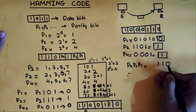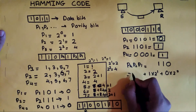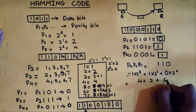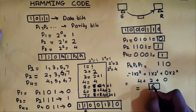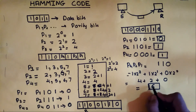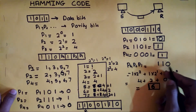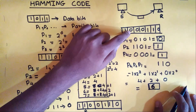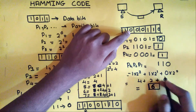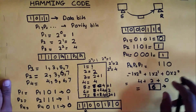The receiver now converts the parity results into binary: 0×2⁰ + 1×2¹ + 1×2² = 0 + 2 + 4 = 6. This means there is an error at position 6, which is exactly where we introduced the error by replacing the 6th position bit with 0. The Hamming code can detect and correct single-bit errors. If the result is 0, there is no error in the code.